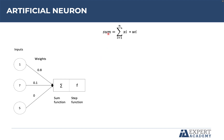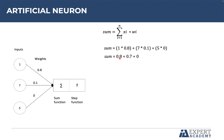The first step is the sum function. We will take the inputs and the weights and apply the equation — multiplying each input xi by its corresponding weight wi, then adding the values together. So: 1 times 0.8, plus 7 times 0.1, plus 5 times 0, which gives 0.8 plus 0.7 plus 0. The result of the sum function is 1.5.